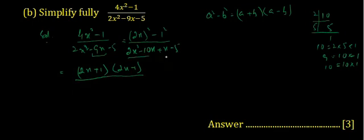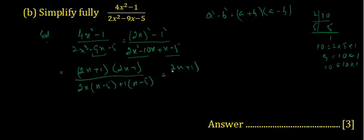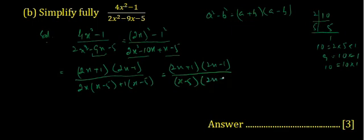For the four terms in the denominator, we take common factors of two each. Taking 2x as common gives x minus 5, and taking 1 as common also gives x minus 5. So the denominator becomes x minus 5 multiplied by 2x plus 1. Since 2x plus 1 appears in both numerator and denominator, they cancel out, giving the answer 2x minus 1 divided by x minus 5.